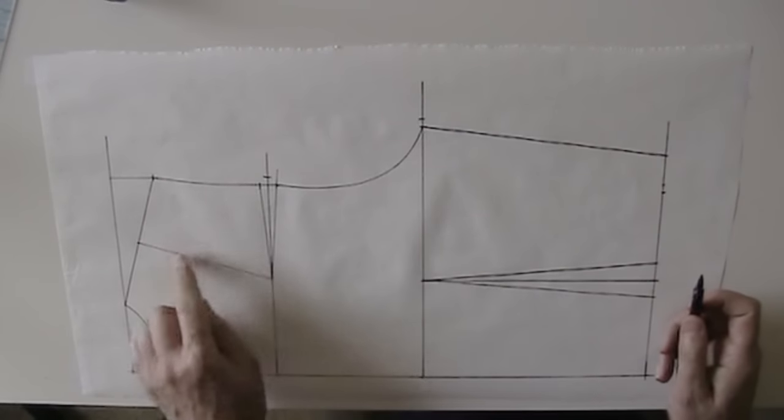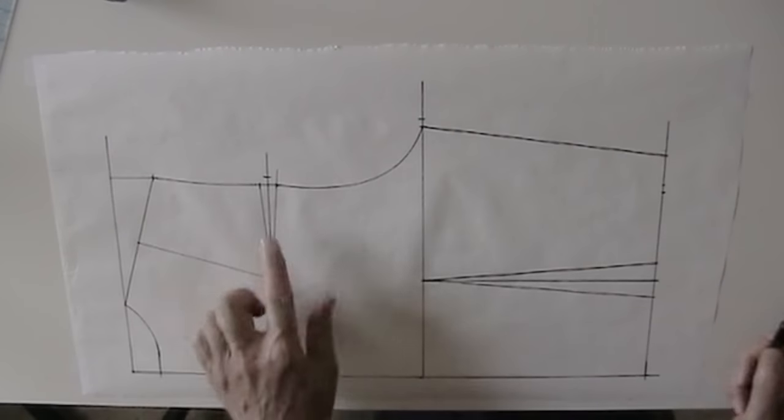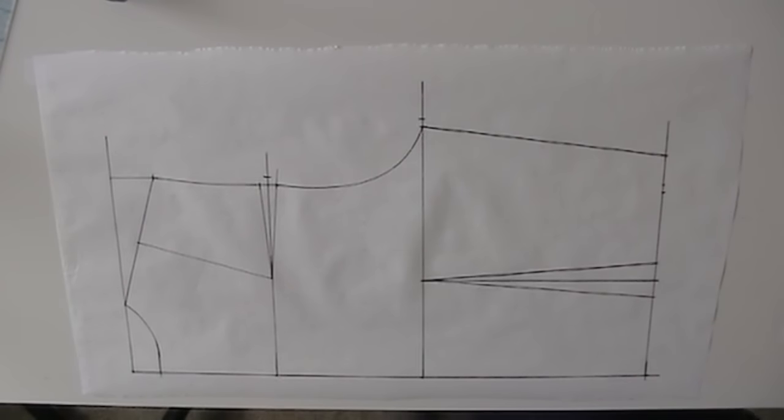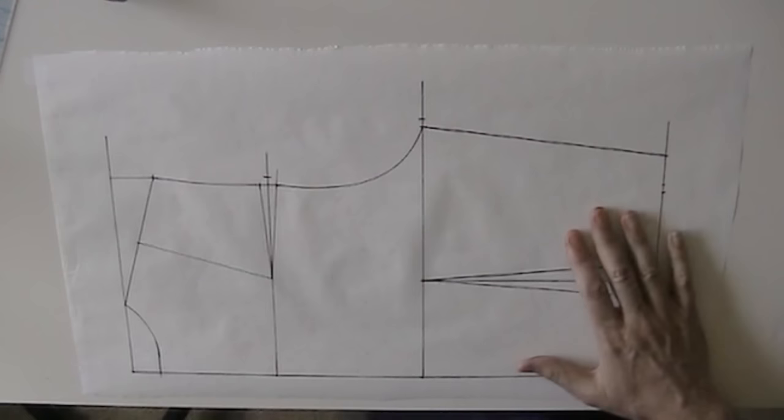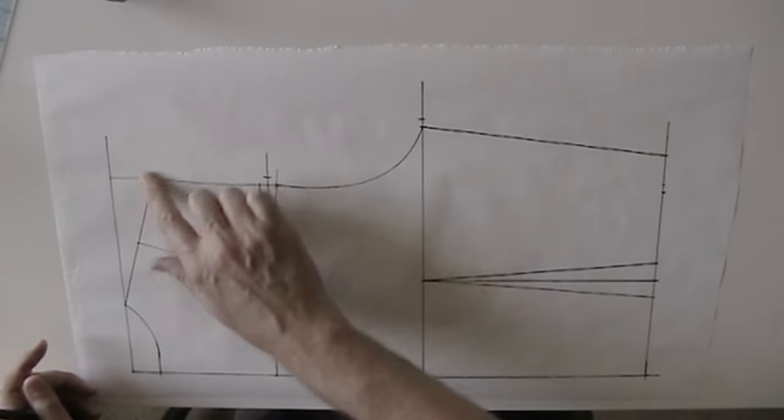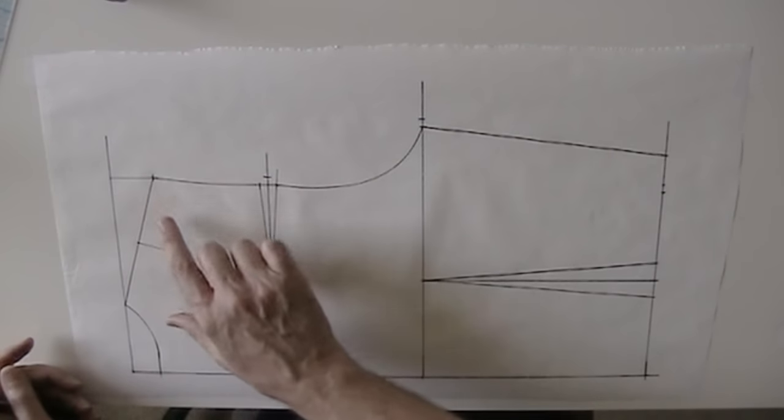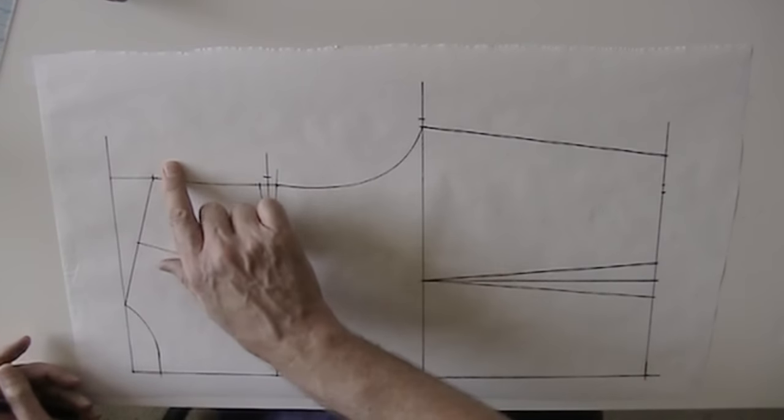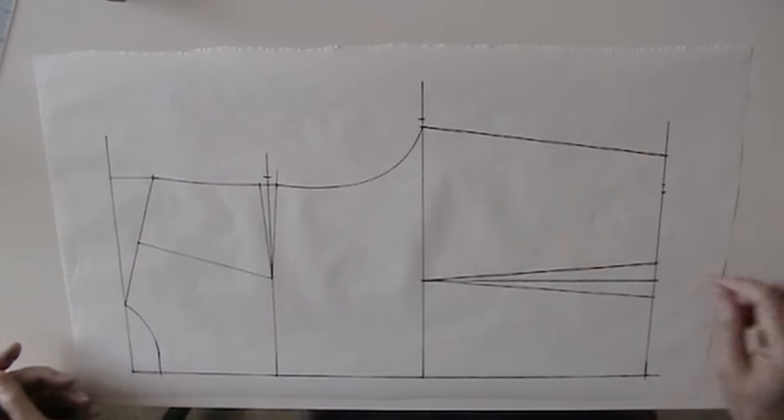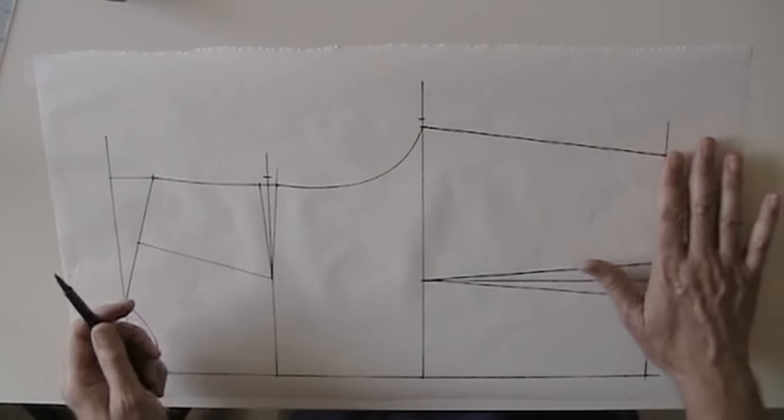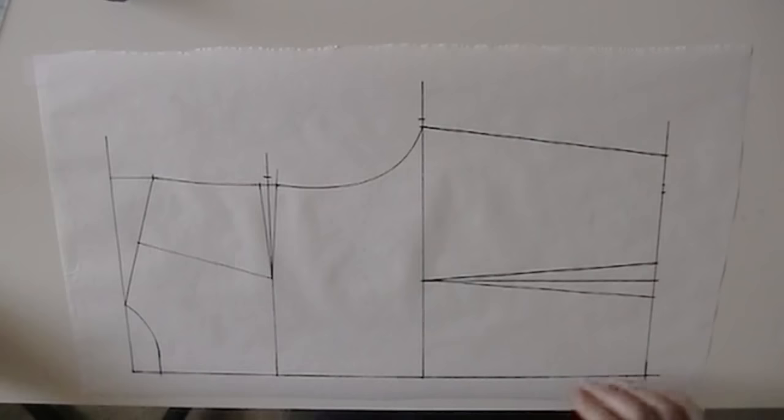Later on, if you wish, you can rotate this dart into the shoulder. I prefer to leave it where it is, at least until after I fit this sloper, because if I have to go back and make some adjustment to my shoulder, making it wider or narrower or raise or lower the shoulder slope, it's better if I don't have the dart in my way. So the pattern is pretty much finished.